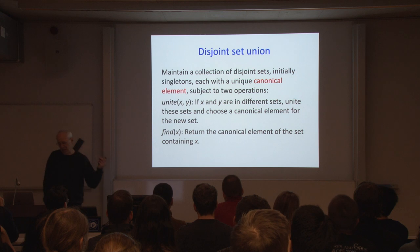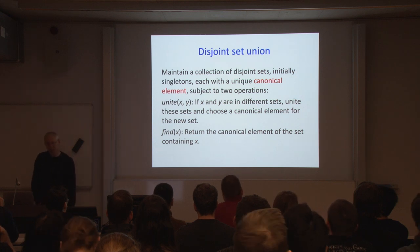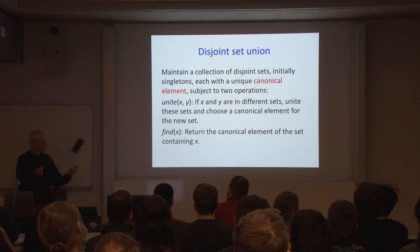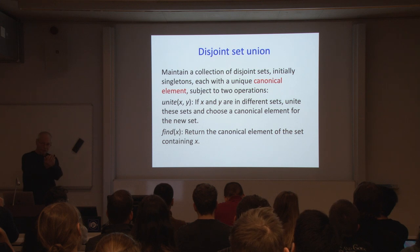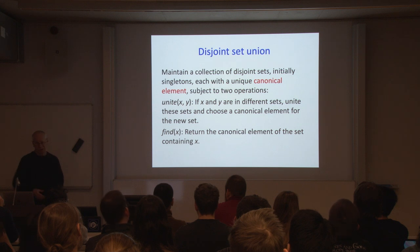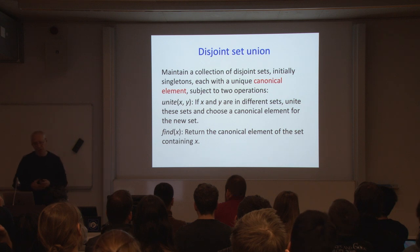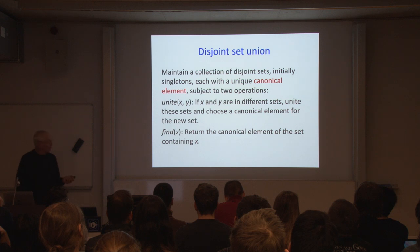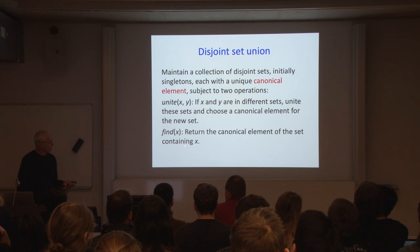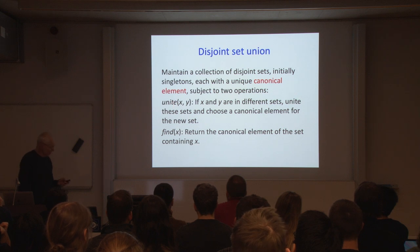The first operation is Unite: it takes two elements, and if they are in different sets, it unites the two sets and chooses a canonical element for the new combined set — the algorithm gets to choose. The second operation is Find, which returns the canonical element of the set containing x. It's an abstract data structure problem.